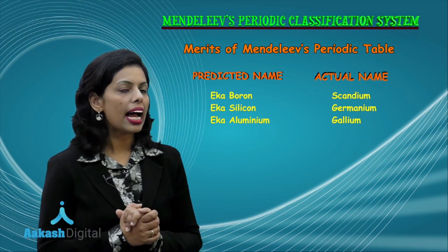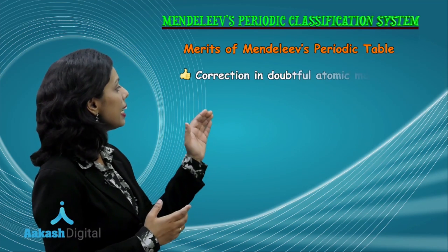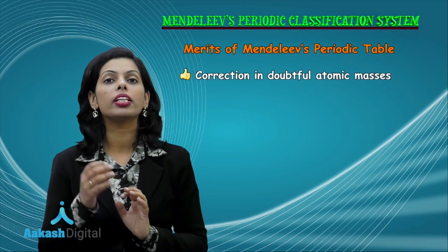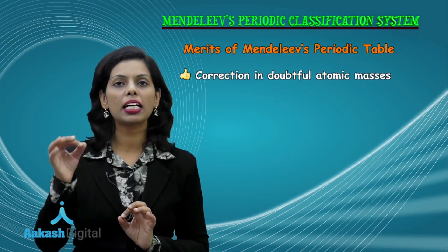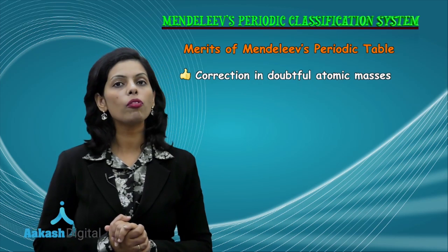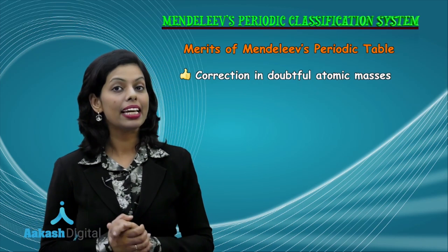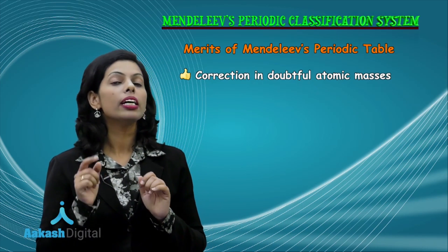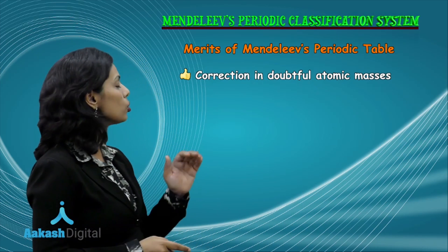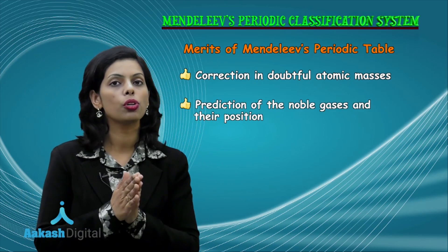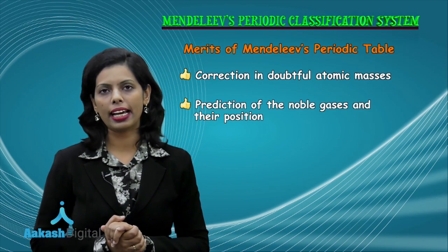Then I told you that there were certain corrections done by Mendeleev in the atomic masses of elements with the help of equivalent weight. He also predicted the position of the noble gases.